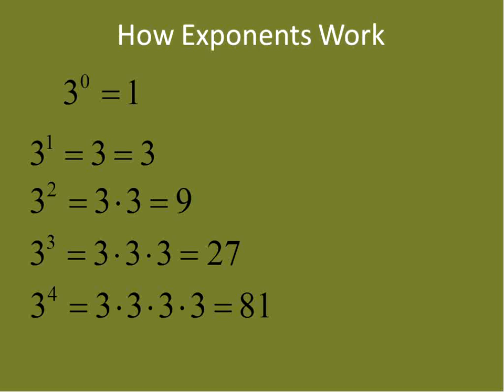3 to the power of 5 is the base times itself 5 times: 3 times 3 times 3 times 3 times 3, which gives us 243. You can see that it increases exponentially — it starts out increasing by only 6, then by larger and larger amounts, until with even bigger exponents the increases from one step to the next are just huge.